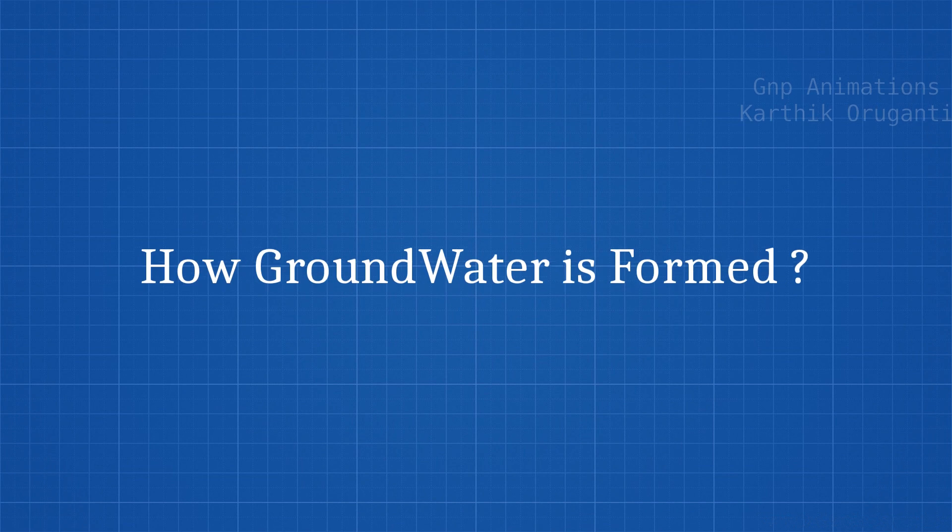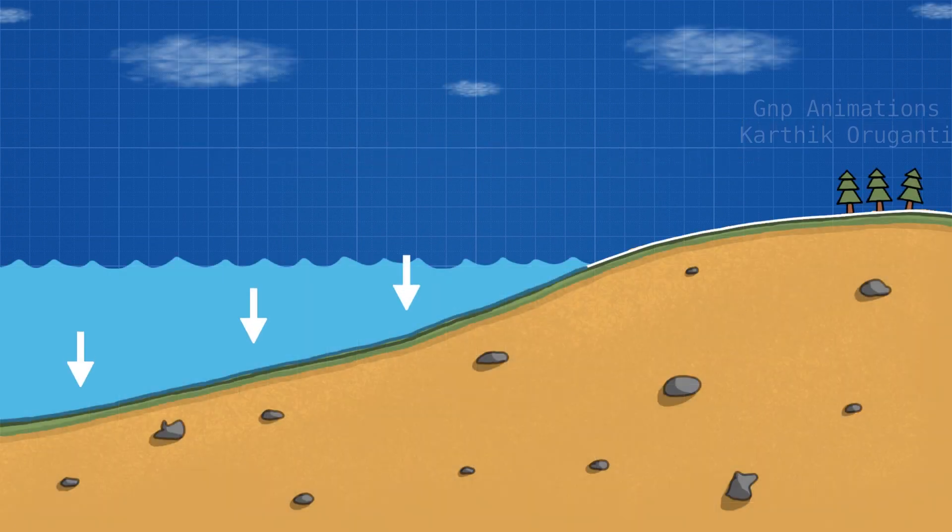So the question here is how does groundwater form? Groundwater forms when water from the surface seeps into the ground. This process is called groundwater recharge. The water is able to move underground through the rock and soil due to connected pore spaces.